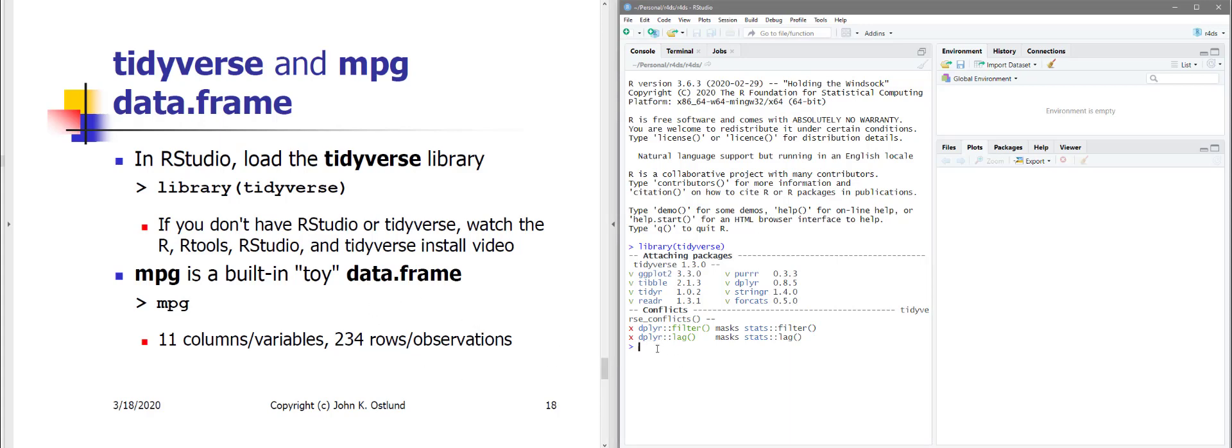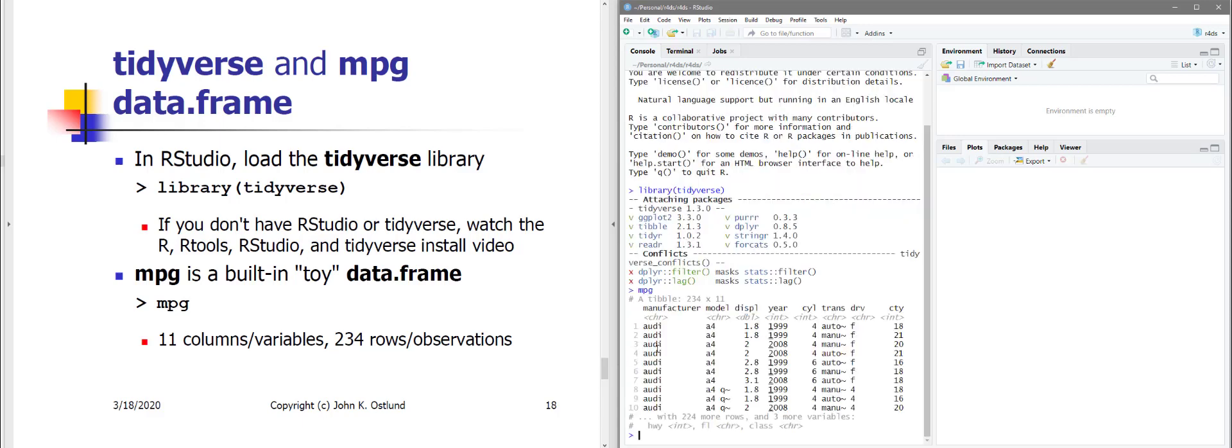Now, happily for us, R comes with some built-in, what I've described here as toy data frames. They're actually legitimate data. They were gathered from actual sources. MPG is one such data frame that we can use to experiment with ggplot2. And if you just type MPG at the prompt, you can see that it's got 234 records.